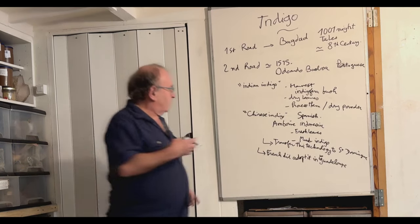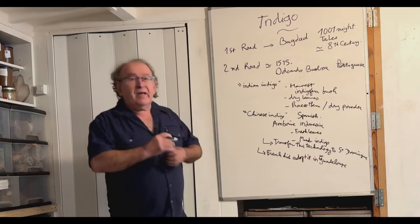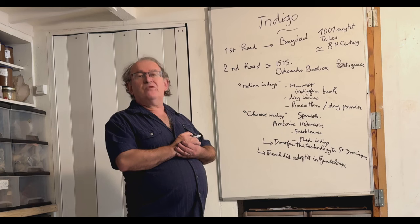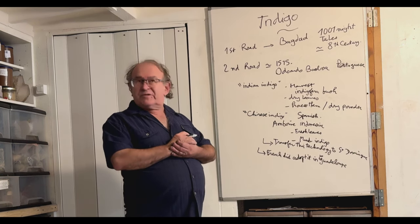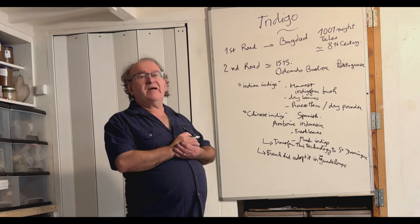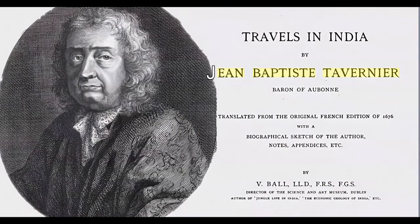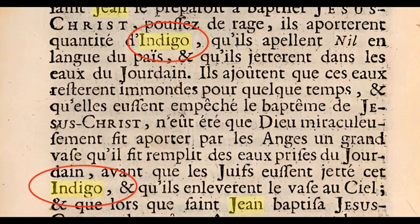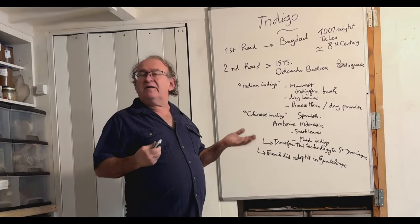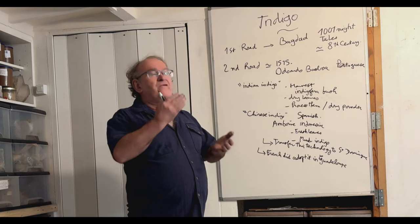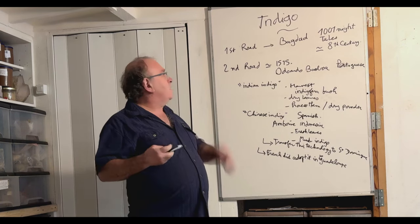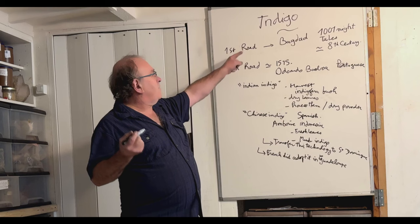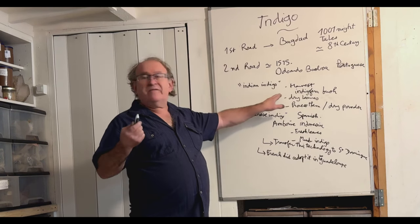The English people did colonize India, and they were absolutely fascinated by one of the French books explaining how to process the indigo. This French book was written by Tavernier. So the book of Tavernier was so impressive of simplicity, efficiency, that the English did translate it in English. And then they did follow this style to make indigo in India. So that's very interesting because the first indigo came from India, from dried leaves of Indigofera.